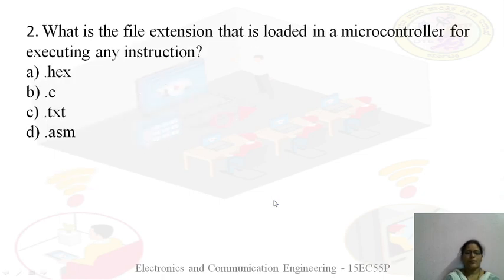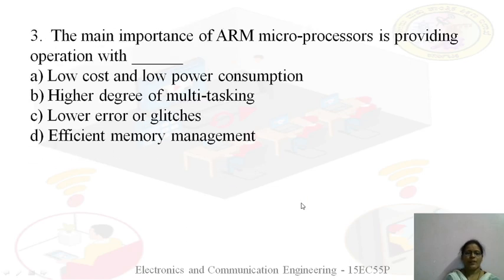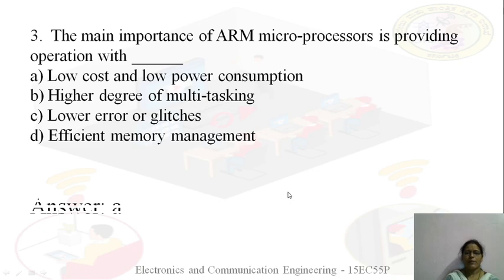Next question: what is the file extension that is loaded in a microcontroller for executing any instruction? Options are .x, .c, .text, .asm. The answer is D — .asm. Next: the main importance of the ARM microprocessor is providing operation with — options are: low cost, low power consumption, high degree of multitasking, low error or glitches, efficient memory management. The main importance is low cost and low power consumption — the answer is option A.